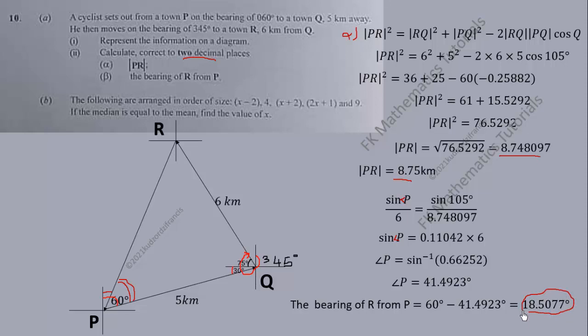But the bearing, since we are rounding to two decimal places, is 018.51 degrees. That is the bearing of R from P. Now let us go on with the part B.